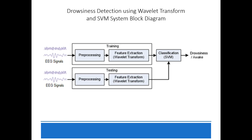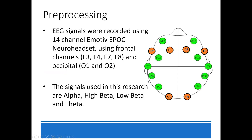This is our drowsiness detection system block diagram using wavelet transform and SVM. The input for this process is our EEG signal, which then continues to preprocessing, followed by feature extraction using wavelet transform. The final step is classification using SVM, and the output from this process is either a drowsiness class or an awake class.